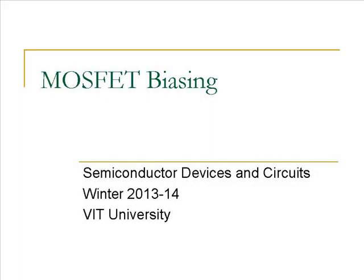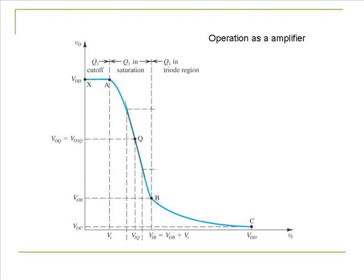In this lecture we are going to learn about biasing of MOSFETs. We saw in the last lecture that a MOSFET can be used as an amplifier, and the way that is done is by choosing a bias point.